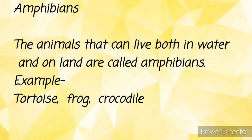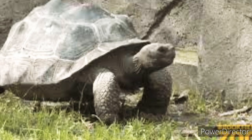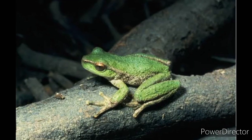The next type of animal is amphibians. The animals that can live both in the water and on land are called amphibians. Woh animals joh water aur land donoh mein jivit rah sakte hain, un animals ko hum kehte hain amphibians. For example, tortoise, frog, crocodile.